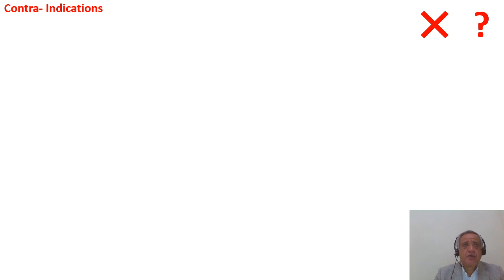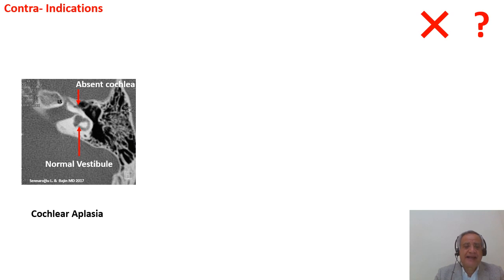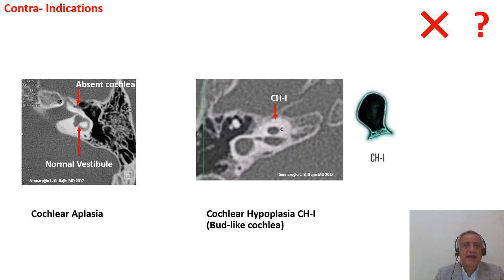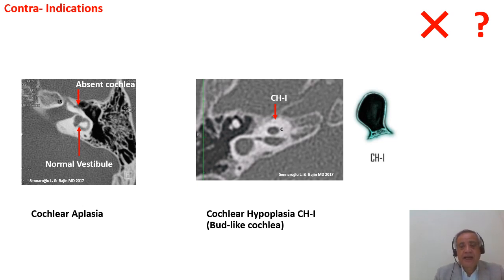The second category is contraindications. Some of these were until recently categorized as absolute contraindications, like cochlear aplasia — where you find the vestibular system but not the cochlea — or cochlear hypoplasia type 1, where you find the vestibular system but the cochlea itself is hypoplastic. It is not a rudimentary otocyst, because in rudimentary otocyst there is only one small cavity with no differentiation between vestibular system and hypoplastic cochlea.